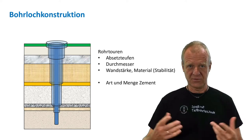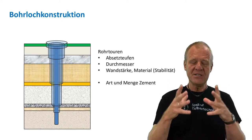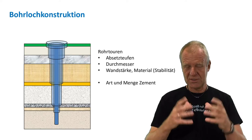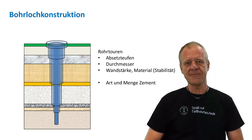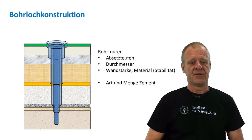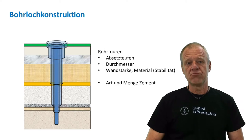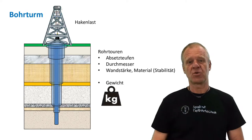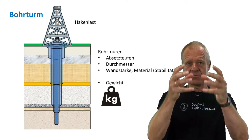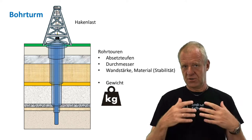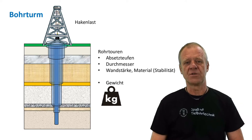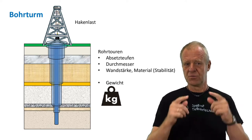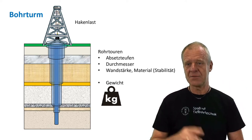For each casing we also have to calculate how stable it needs to be so that it can withstand the pressure of the surrounding formation and will not collapse. In this process we select the material of each casing string and the required wall thickness. When this is done we calculate how heavy these pipes will be. This will help us determine the required hook load for the drilling rig we want to rent. We need to ensure that the drilling rig can handle all the expected loads, which can easily range in the area of several hundred tons.